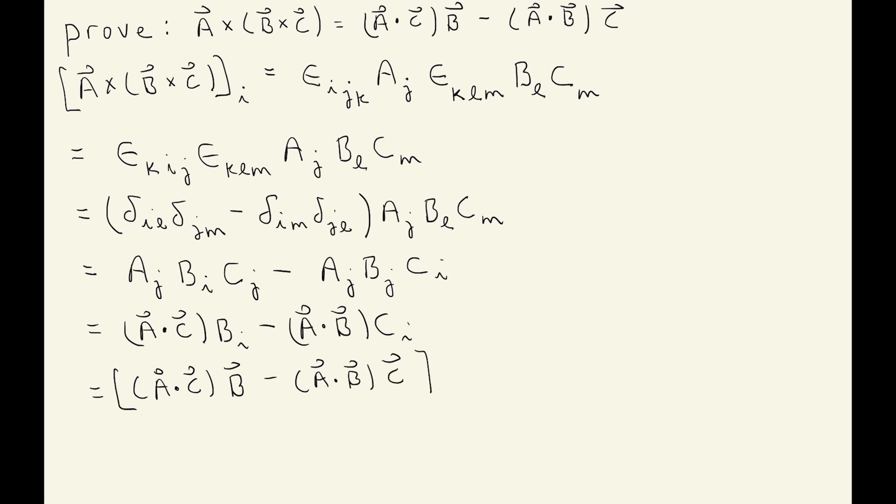This is just the i-th component of a vector — specifically (a dot c) times vector b minus (a dot b) times vector c, the i-th component. So I've proved that the i-th component of a cross (b cross c) equals (a dot c) times b minus (a dot b) times c. Since that's true for i equals one, two, and three, that proves the vector identity.